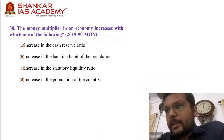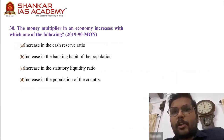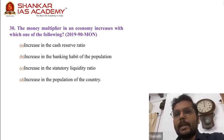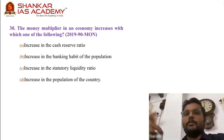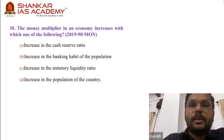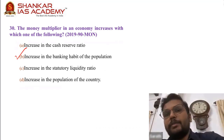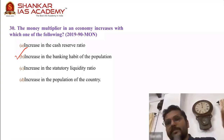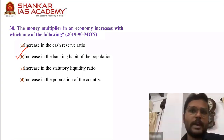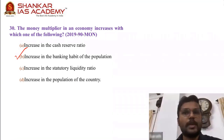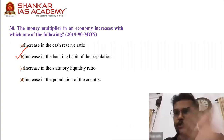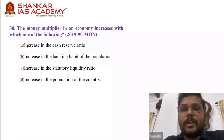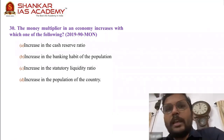Question 30 is a repeat of the earlier money multiplier question. Money multiplier in an economy increases with which of the following: increase in CRR, increase in SLR, increase in population, or increase in banking habits of the population. They have just changed the order — B has become C, C has become B. The answer in this case is B. If you prepared for 2021 and looked at previous questions, UPSC itself had given you the answer already. 30, B.